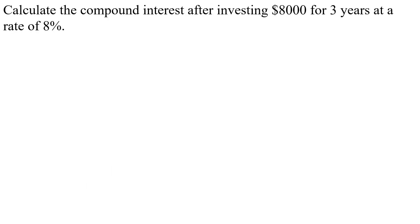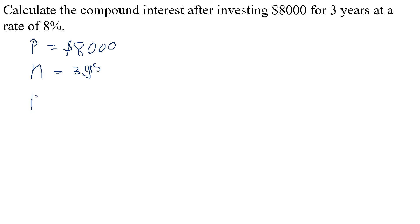Here we have an example: calculate the compound interest after investing $8,000 for three years at a rate of 8%. First, as I normally like to do, let's identify what is given. We are given our principal — as stated in the question, the investing amount is $8,000, so P equals $8,000. We also know the duration N, which is three years. And we know our rate R, which is 8%. This is what is given, and this is what we need in order to calculate our compound interest.